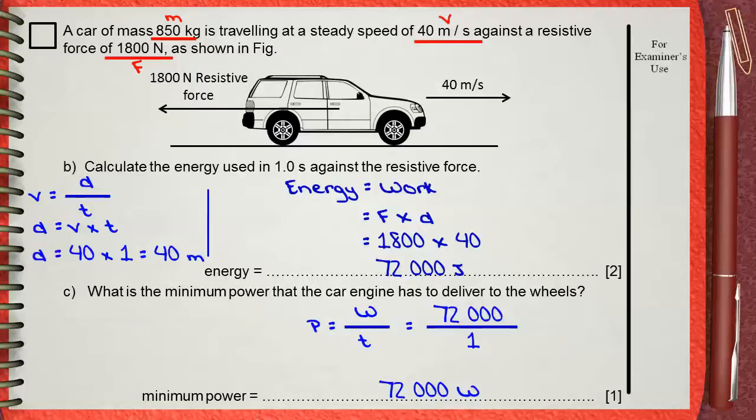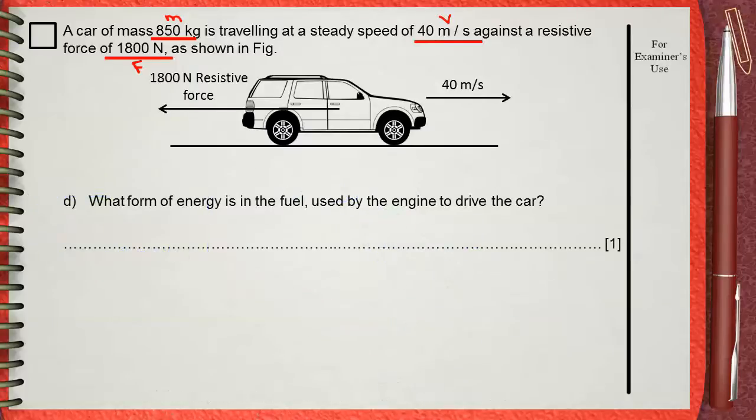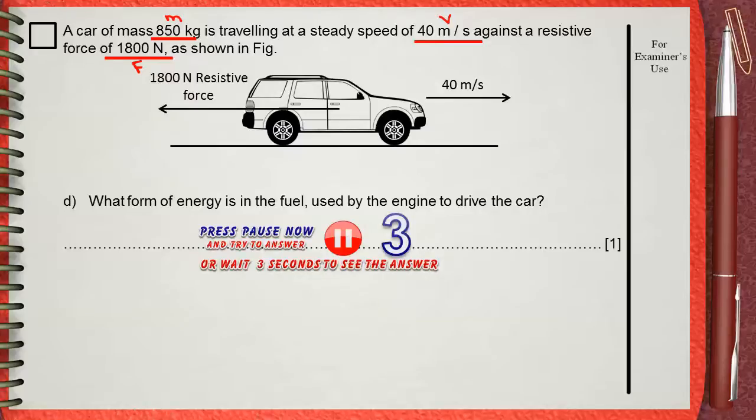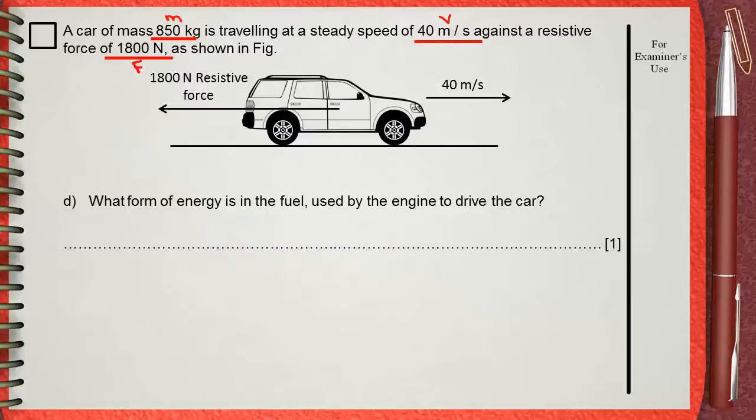Question D: What form of energy is in the fuel used by the engine to drive the car? Just remember what you have studied. Fuel burns to produce energy. This means that the energy in the fuel is chemical energy.